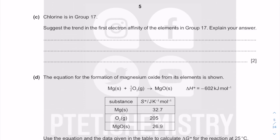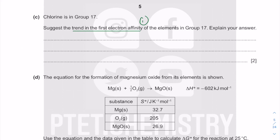Chlorine is in Group 17 with seven outer shell electrons. The question asks you to suggest the trend in first electron affinity down the group and explain your answer. This has to do with effective nuclear charge and therefore electronegativity. The trend in electronegativity results from effective nuclear charge, which depends on nuclear charge and shielding. I'll explain first before stating the trend.